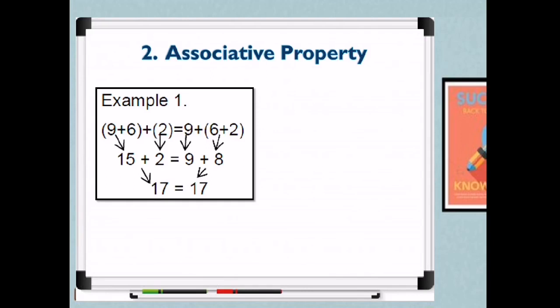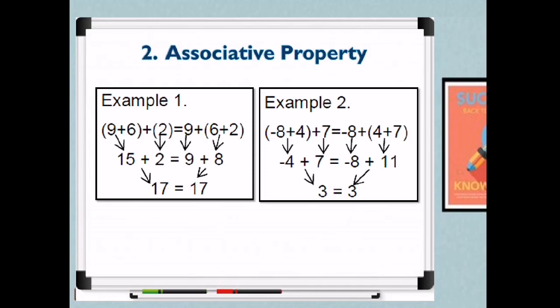For example: 9 plus 6 plus 2 — if you first add 9 plus 6, the sum is 15, then add 2, you get 17. On the other hand, 9 plus 6 plus 2 — if you first add 6 plus 2, the sum is 8, then add 9, the answer is still 17. So 17 equals 17. Another example: negative 8 plus 4 plus 7. Negative 8 plus 4 is negative 4, plus 7 is positive 3. On the other hand, 4 plus 7 is 11, and 11 plus negative 8 is also positive 3. No matter which two you add first, then add the third, you get the same answer.